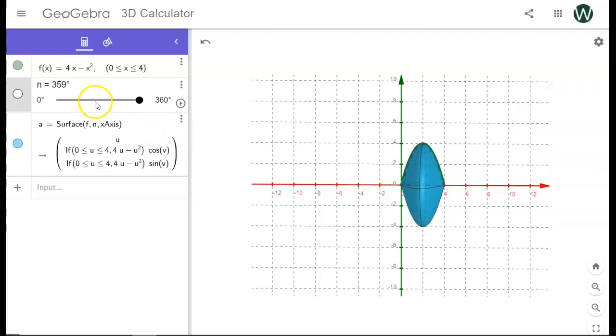If I was doing a problem with washers, I would do another function. And I would do a surface for the first function and then a surface for the second function. And you would see the two surfaces, one inside the other.